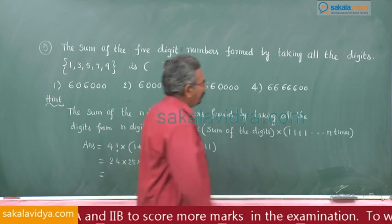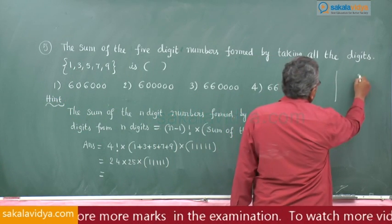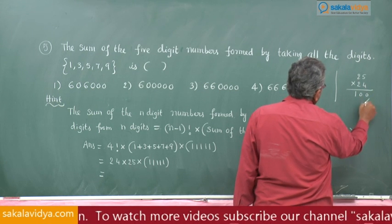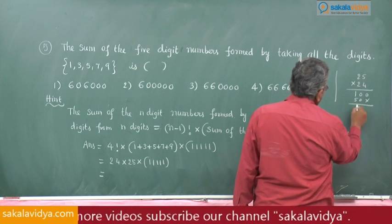so 24 into 25. What is 25 into 24? Let us try 25 into 24, 100, this is 50, 600